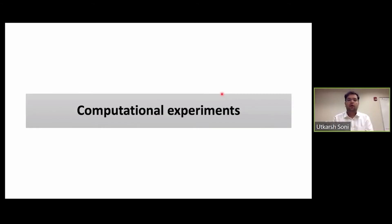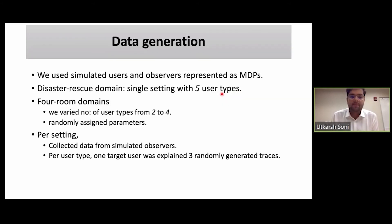First I'll talk about the computational experiments. For that we used simulated users. The target users were simulated as an MDP and the observers by which we collect data were also simulated as an MDP. We had a single setting for the disaster rescue domain where we handcrafted five user types. For the four rooms domain, we had three settings where we varied the number of user types from two, three, and four, and the model of each user type was randomly allocated. We had a total of four settings. For each setting, we collected data from simulated observers. For each user type, we picked one target user and that target user was explained three randomly generated traces by whatever techniques we were evaluating.